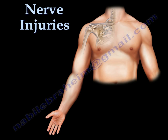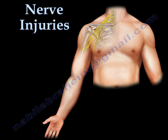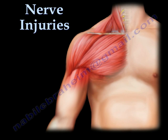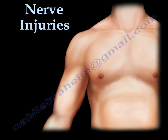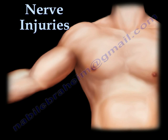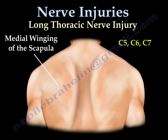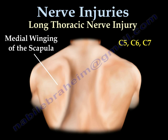Nerves originate from the spine. They provide sensation to the skin and allow motor power to the muscles. When nerves are injured, these structures are affected. Winging of the scapula usually occurs due to long thoracic nerve injury.